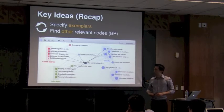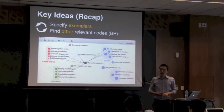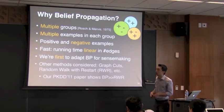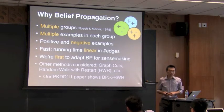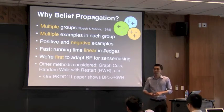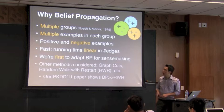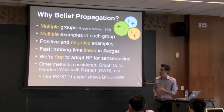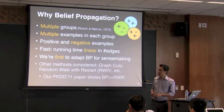The key idea of Apollo is very simple: the user specifies exemplars, and Apollo finds related papers using belief propagation. Belief propagation is able to support many desirable features in sense-making that other algorithms cannot concurrently support — for example, multiple groups or an arbitrary number of groups, multiple examples in each group, positive and negative examples, and it's fast, able to handle millions of edges in real time.